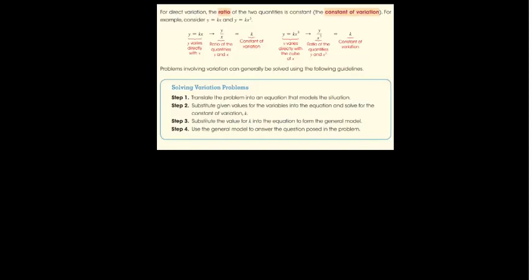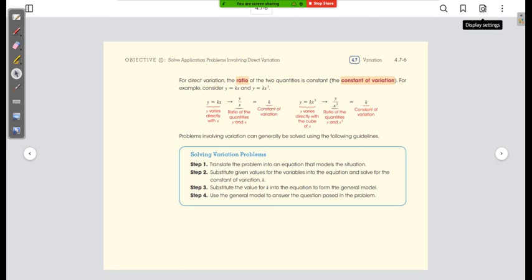For direct variation, the ratio of the two quantities is constant — it's a constant of variation. That's the algorithm to follow. Once you really understand what you're doing, you don't have to rigidly go step 1, step 2, step 3, step 4 — at least not for this type of problem.